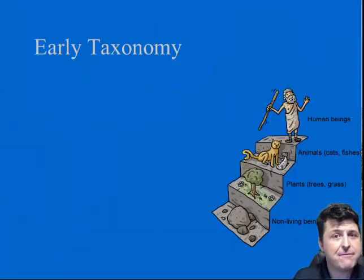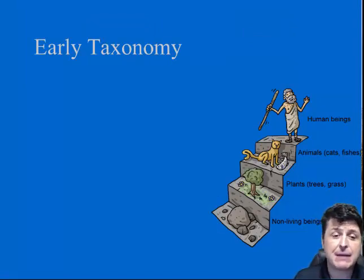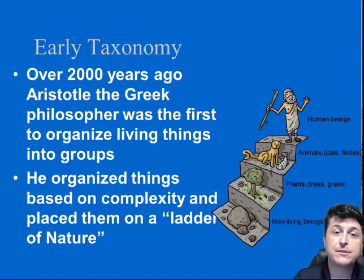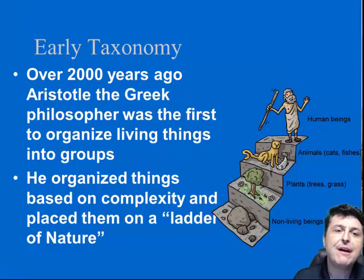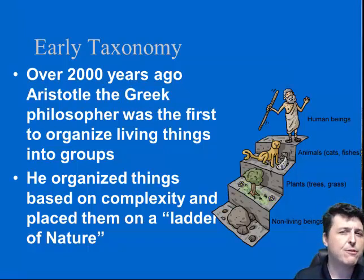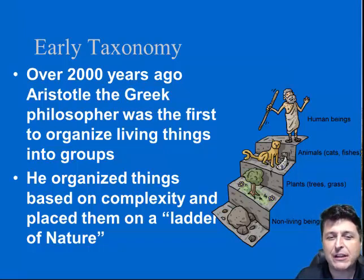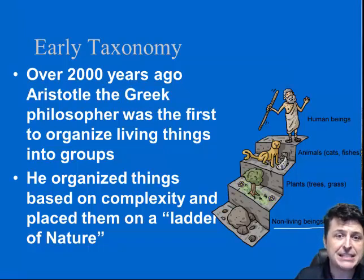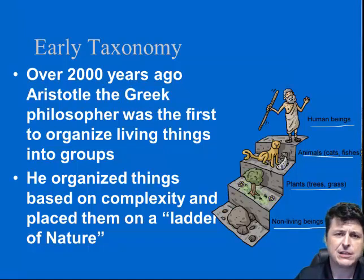How did we arrive at our modern system of classification? It started a long time ago. The first to actually classify was the Greek philosopher and scientist Aristotle. About 2,000 years ago, he put living things into groups based upon their overall inferred complexity — placing them on a sort of ladder of nature with non-living things at the base, and more complex things moving up, where he thought humans were perhaps the most complex.